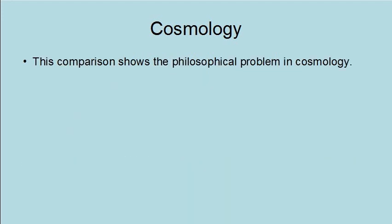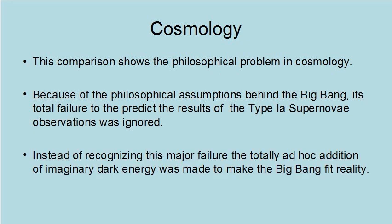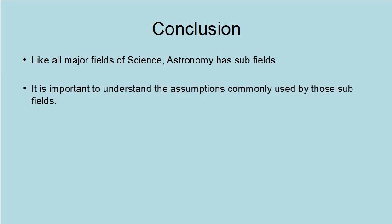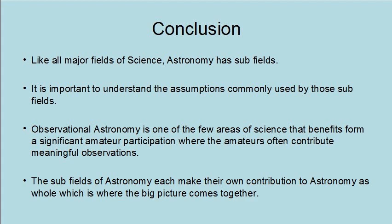This comparison shows the philosophical problem in cosmology. Because of the philosophical assumptions behind the Big Bang, its total failure to predict the results of the Type Ia supernovae observations was ignored. Instead of recognizing this major failure, the totally ad hoc addition of imaginary dark energy was made to fit reality. Like all major fields of science, astronomy has subfields, and it is important to understand the assumptions commonly used by those subfields. Observational astronomy benefits from significant amateur participation, where amateurs often contribute meaningful observations. The subfields of astronomy each make their own contribution to astronomy as a whole, which is where the big picture comes together.